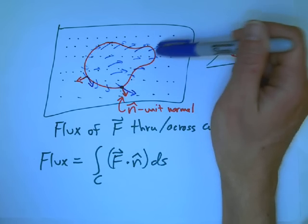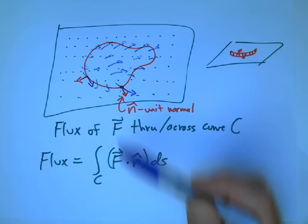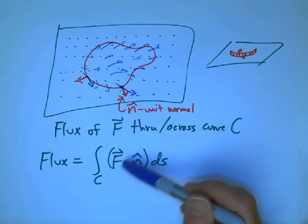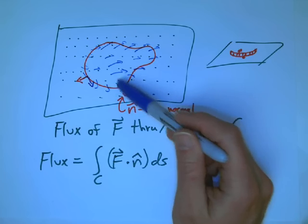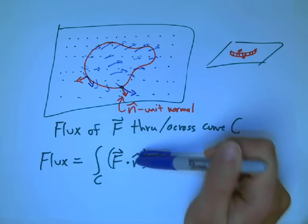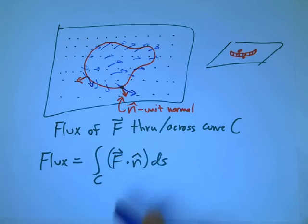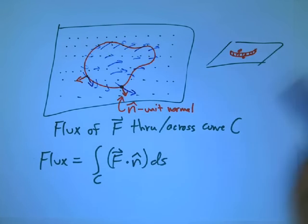So we're saying, what's the, another way to say it, is what's the component of F, the blue vector field, that is actually going across the curve in the direction that's perpendicular to the curve at any point? Get those numbers, add them up along the curve. Okay. Well, let's see if there's a better way to do that.